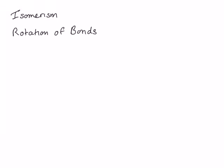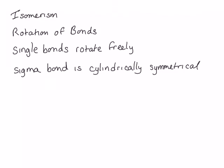So we'll start with single bonds. Single bonds rotate freely. The reason that single bonds can rotate freely is that the sigma bond is cylindrically symmetrical, which means that rotating around the axis of the sigma bond does not affect it.